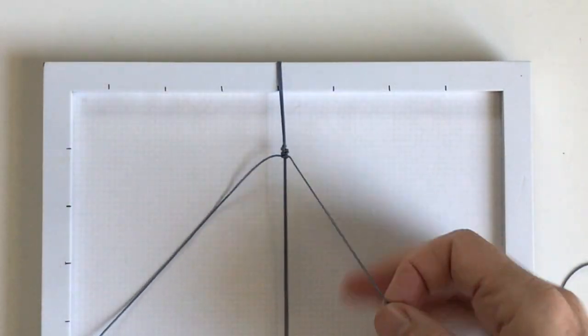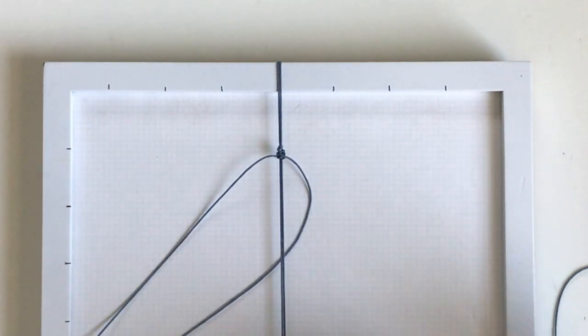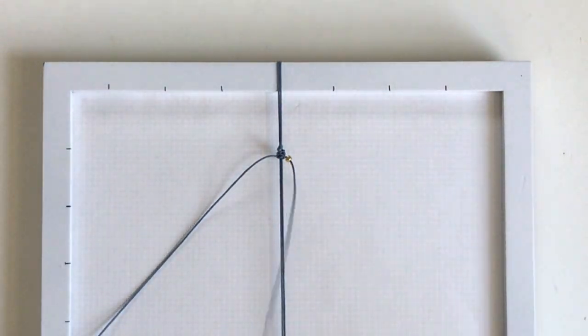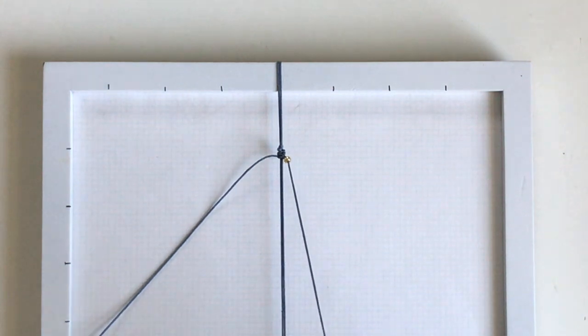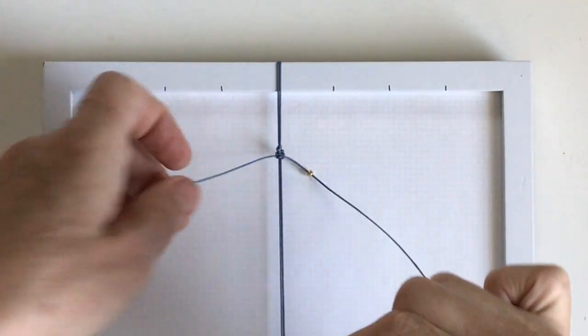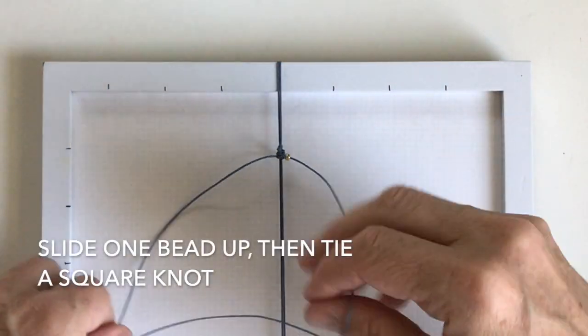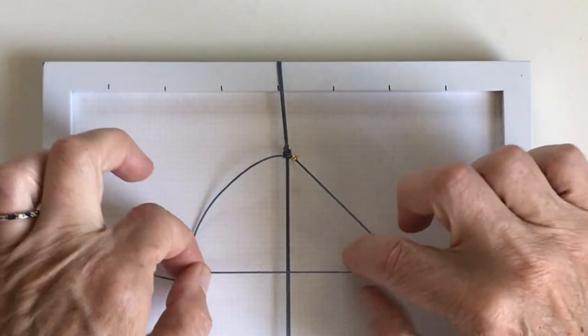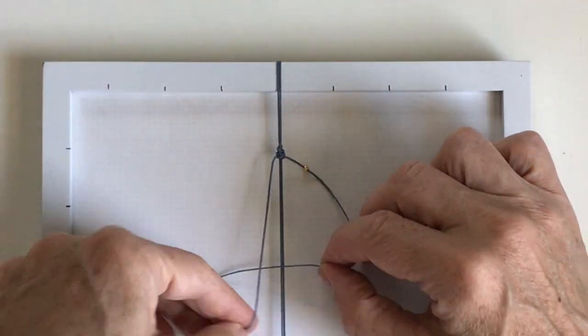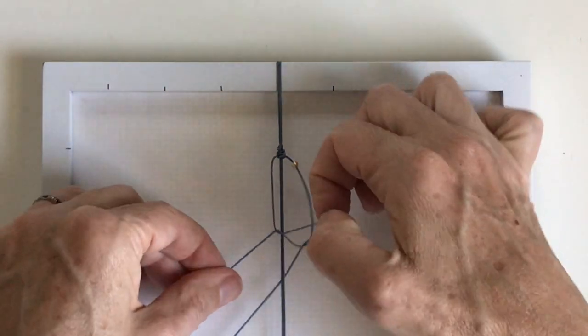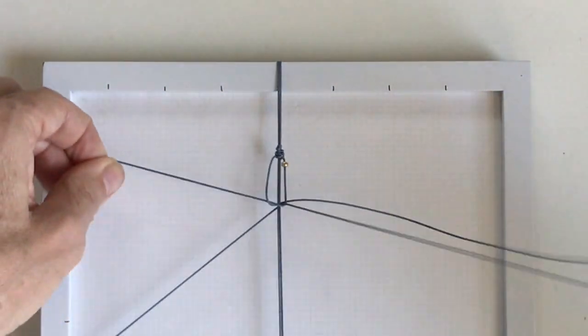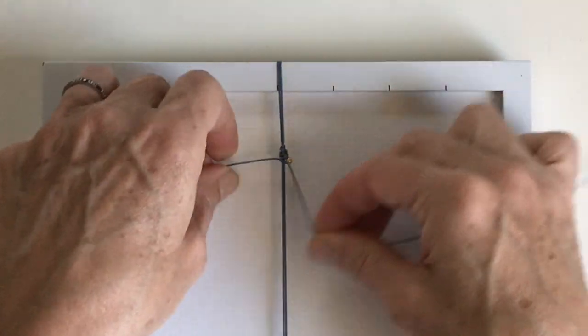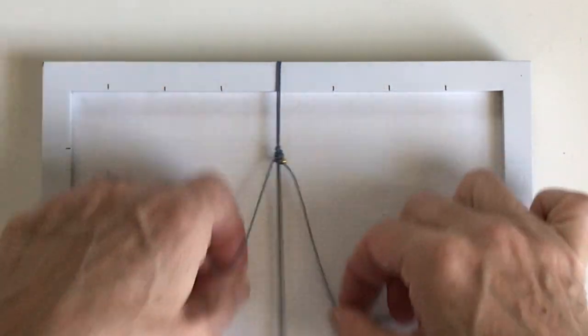And now we're going to start adding beads. So you're doing the same knot but you're just going to slide the bead up close to the other knots. And then you make the four with the side that the bead is on. And bring the other side through. There now you have a bead on your anklet.